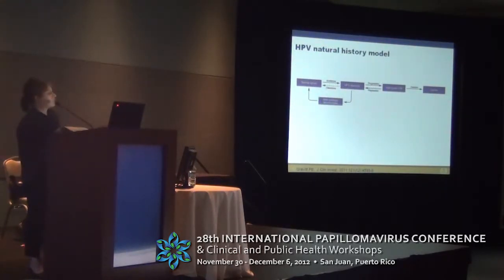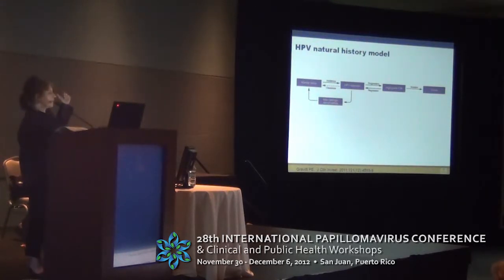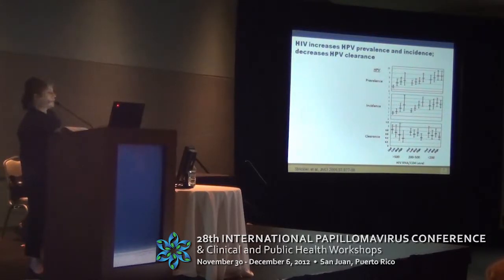This is a recapitulation of the natural history model presented by Susanna Kierre this morning. HIV basically is driving that natural history pathway towards progression to the right and decreasing the likelihood that natural history will go back towards the regressive pathway to the left — we've seen that in tons of epidemiologic studies. This is an example from the WISE cohort in North America demonstrating that HIV increases both HPV prevalence and HPV incidence, and that it decreases clearance of infection.